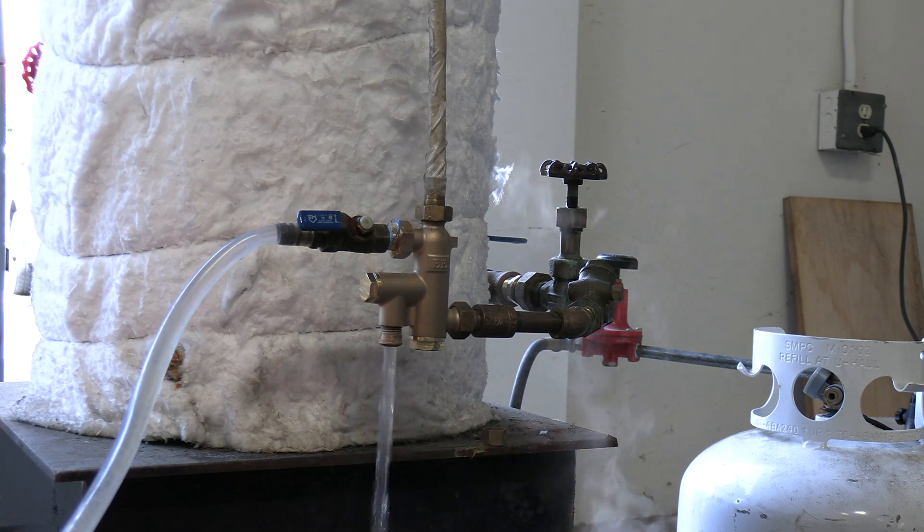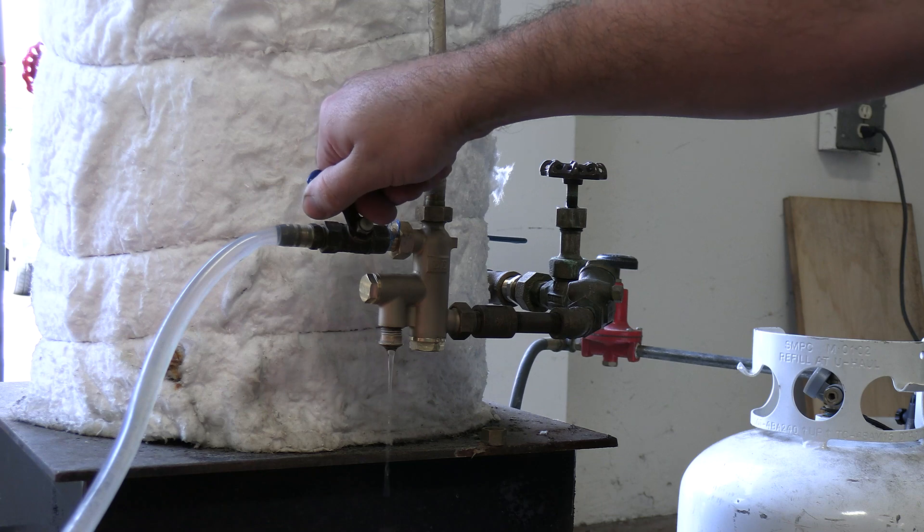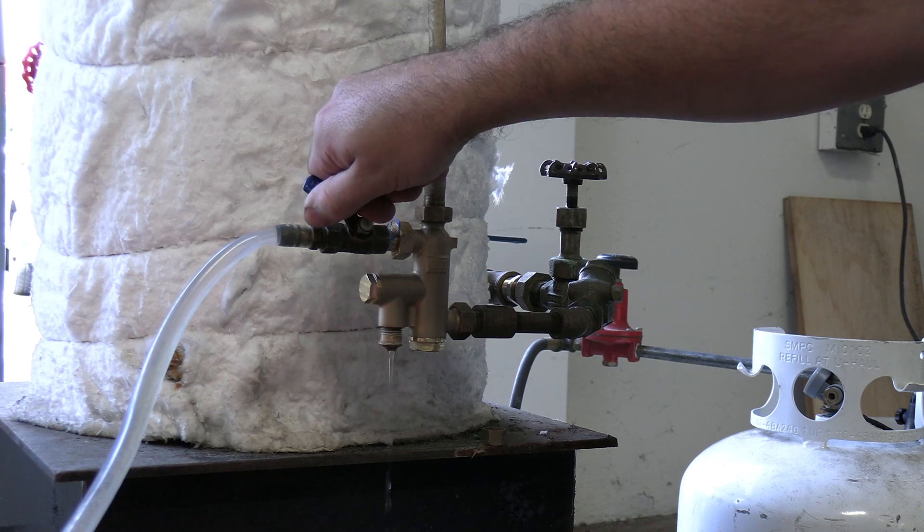When you start to get above the injector's maximum operating pressure, you will notice it start to drip. It is still injecting, but with some waste, no matter how you adjust the water valve.